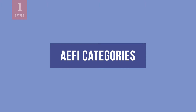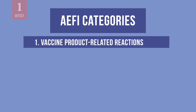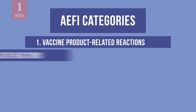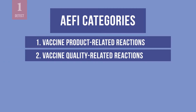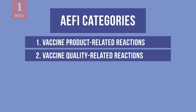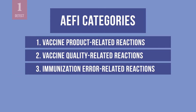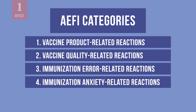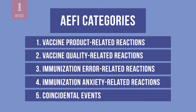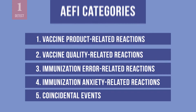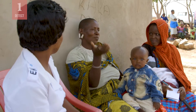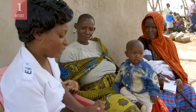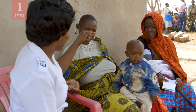Keep in mind that AEFIs are grouped into five categories. Adverse events may be related to the properties of the vaccine product itself, a quality defect of the vaccine product or the administration device, an immunization error caused by inappropriate handling, prescribing, or administration of the vaccine, and anxiety about the vaccine. Some events are coincidental and not actually related to the vaccination. You do not need to categorize an AEFI — this is done after an investigation, based on your report.